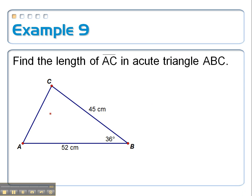On example 9, we're trying to find the length of AC, which I'll denote with an X, in acute triangle ABC. So I'm going to follow this X across to the angle it's opposite from, that's 36.